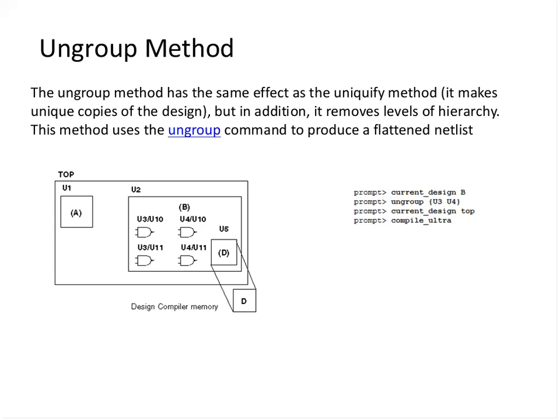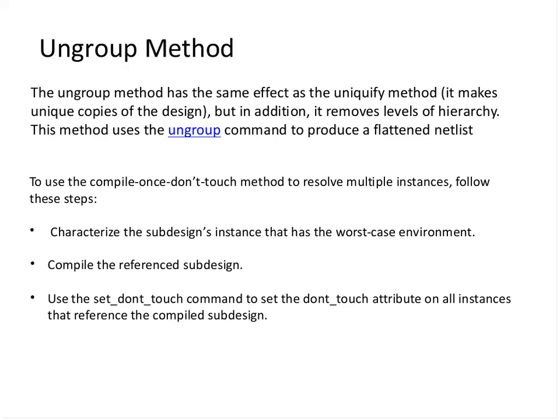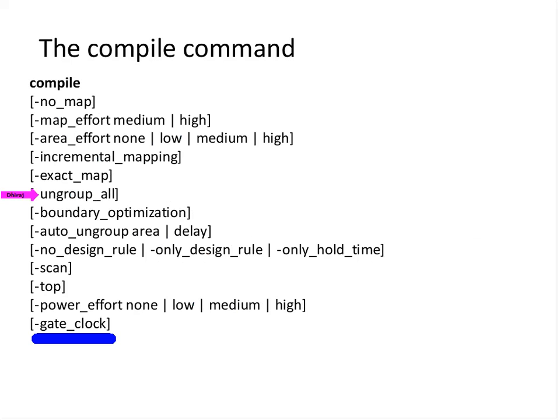As we proceed in this course we will see some examples and I will explain the options. One option is very interesting - gate_clock. I will have a couple of lectures on power and will discuss gate_clock during the power lectures. Gate clock is used to save dynamic power. So in summary, we saw the different compile strategies - top-down and bottom-up - we saw how to resolve multiple instances using the Uniquify process or compile-once-don't-touch, we saw the ungroup command, and we saw the compile command options. There are two commands: compile and compile_ultra. In this lecture we have seen the compile command. I recommend being comfortable with this command before unit 4, where we will see compile_ultra and some advanced features. Thank you.